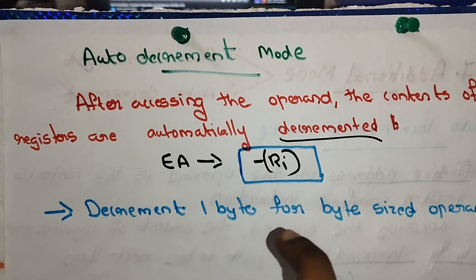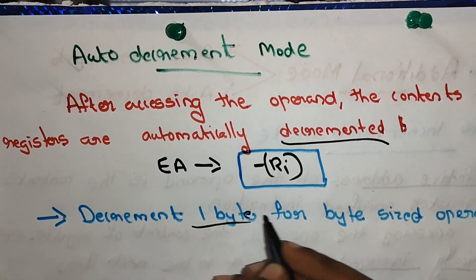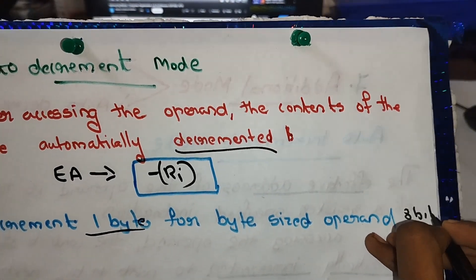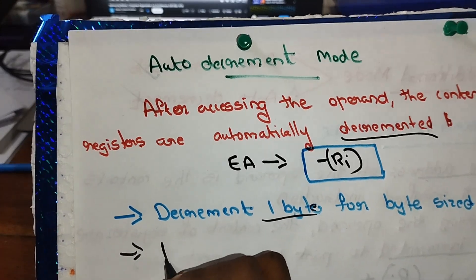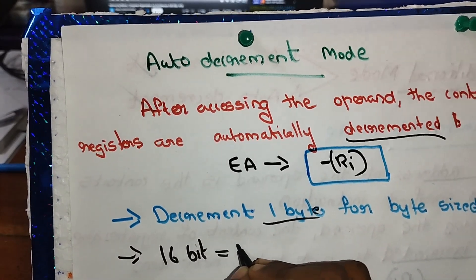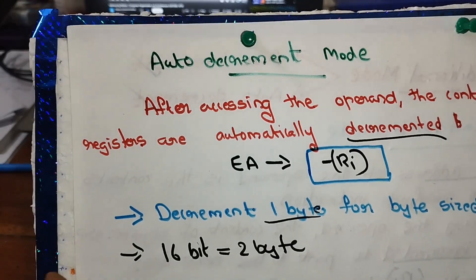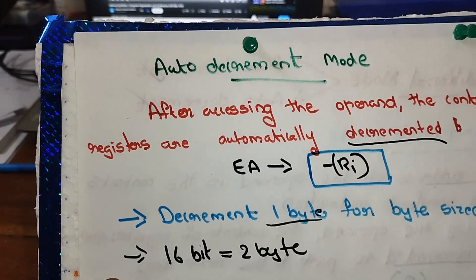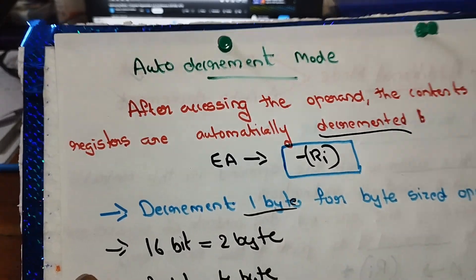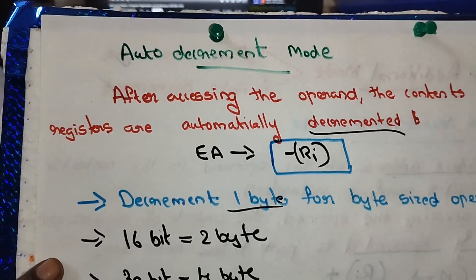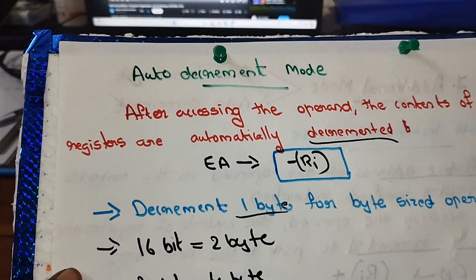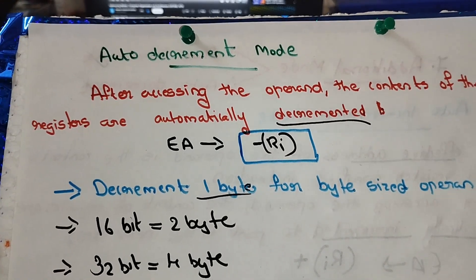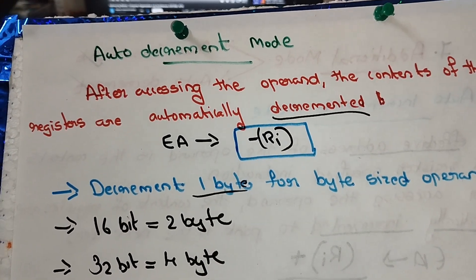Auto-decrement mode is the opposite of auto-increment. After accessing the operand, the content of the register is automatically decremented. The decrement amount depends on the operand size — for example, 1 byte, 2 bytes, or 4 bytes — matching the size of the operand being accessed.